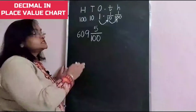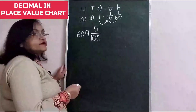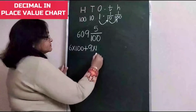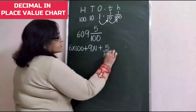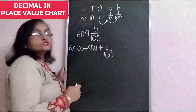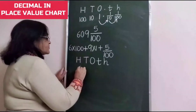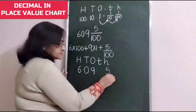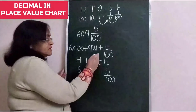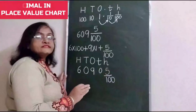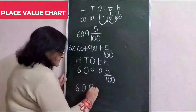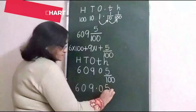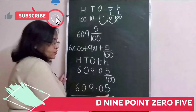Let's take another example: 609 and five hundredths. In expanded form, it will be 6 multiplied by 100, plus 9 multiplied by 1, plus 5 upon 100. Now let's place it into the place value chart. 6 will come under hundreds. Write 0 under tens and write 9 under ones. Now 5 hundredths will be written here. Nothing is under tenths, so we will put 0 there. In decimal form this is written as 609.05.